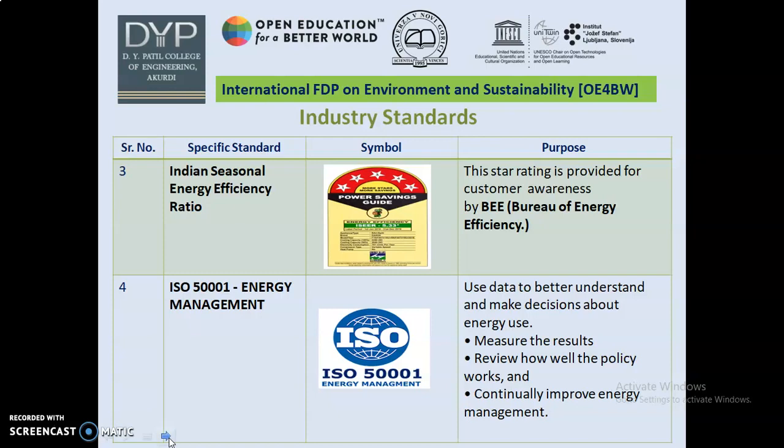The next standard is Indian Seasonal Energy Efficiency Ratio, represented by ISWR. This star rating is provided for customer awareness by BEE — Bureau of Energy Efficiency — and is utilized while purchasing an air conditioner for saving energy. Similarly, ISO 50001 is related to energy management. Its purpose is to use data to better understand and make decisions about energy use, measure results, review how well the policy works, and continually improve energy management.